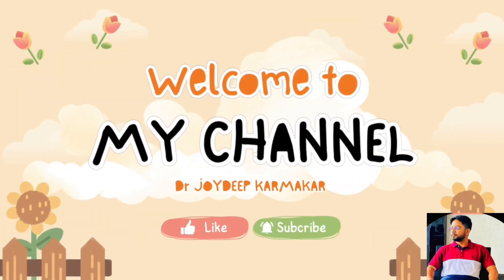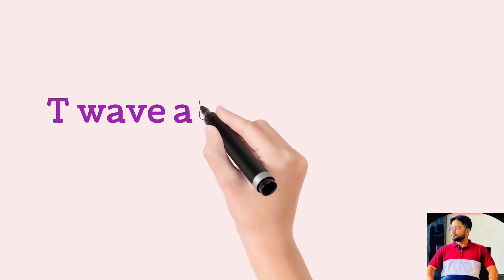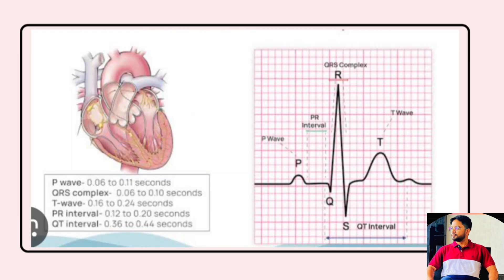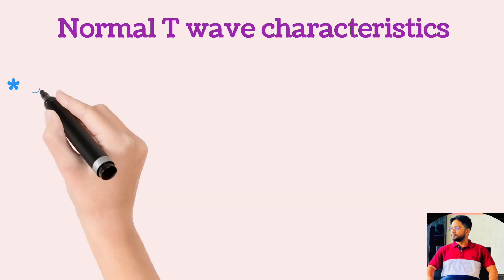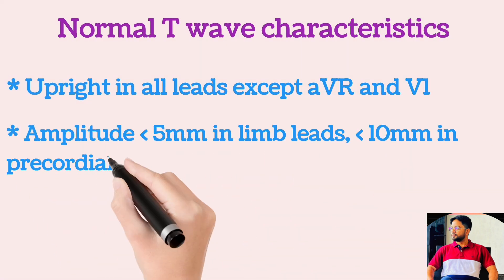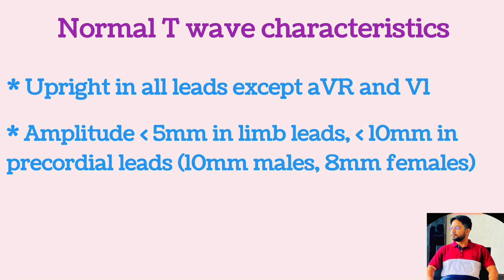T-wave abnormalities. Before knowing the T-wave abnormalities, we have to know the normal T-wave characteristics. The T-wave is the positive deflection after each QRS complex and it represents ventricular depolarization. The T-wave is upright in all leads except AVR and V1. Amplitude is less than 5 mm in limb leads and less than 10 mm in precordial leads — basically 10 mm in males and 8 mm in females.